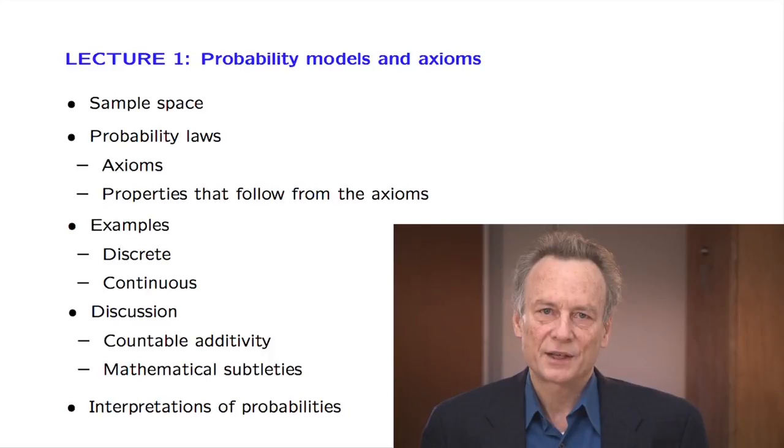Probabilities have to satisfy certain basic properties in order to be meaningful. These are the axioms of probability theory. For example, probabilities cannot be negative. Interestingly, there will be very few axioms, but they are powerful and we will see that they have lots of consequences. We will see that they imply many other properties that were not part of the axioms.